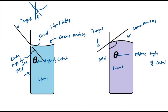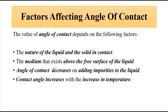Simply put, the angle of contact is the angle between the tangent to the curved liquid surface — whether concave or convex — and the interface where the solid comes in contact with the liquid. The factors which affect the angle of contact are: the nature of the liquid and solid in contact, the medium above the free surface of the liquid (vacuum or atmospheric pressure), the presence of impurities (more impurities means less angle of contact), and temperature (the angle of contact increases with increase in temperature).